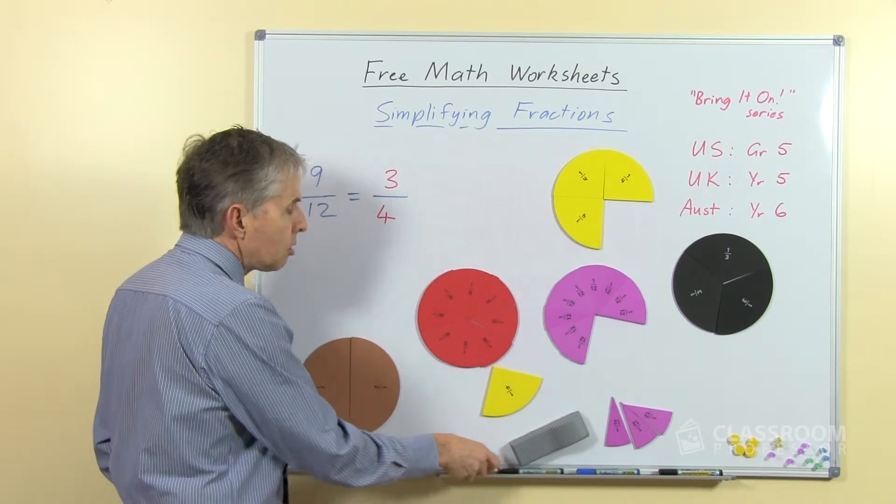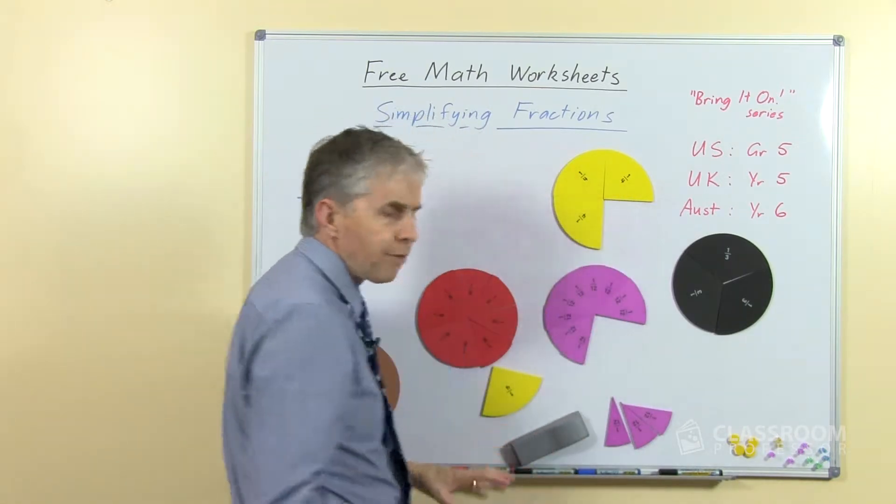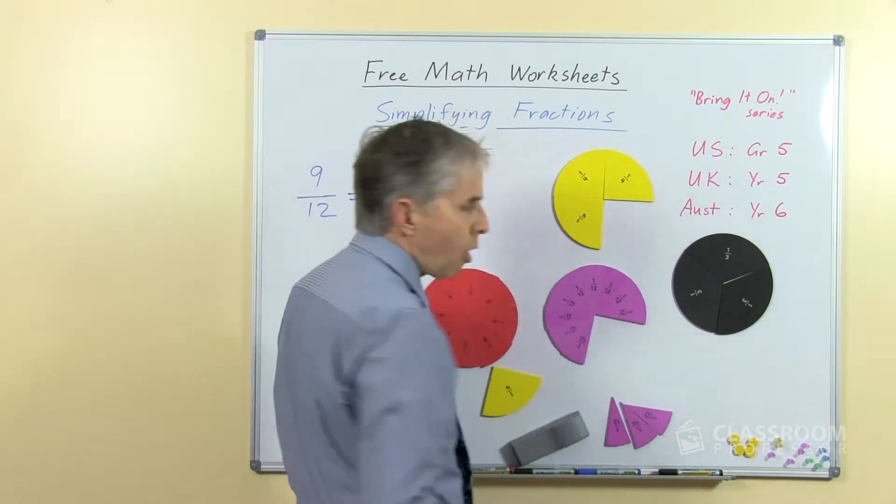Okay, so far so good, we've found that nine twelfths is the same as three quarters, we can put them on top of each other, we can prove that we're right there, but why?